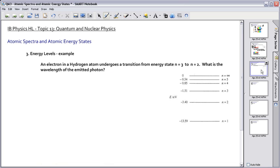So let's take a look at a specific example. This is a specific example here. We have an electron in hydrogen, just like we were looking at, and it undergoes a transition from energy state n equals 3 to n equals 2. The question is, what's the wavelength? That means we want lambda.